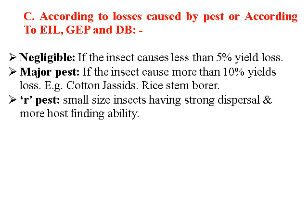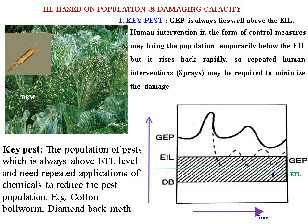R-pests: small-sized insects having strong dispersal and more host-finding capability are termed as R-pests. Based on pest population and damaging capacity, the first category is key pest. The general equilibrium position always lies well above the economic injury level (EIL). Human intervention in the form of control measures may bring the population temporarily below the EIL, but it rises back rapidly. Repeated human intervention or stress may be required to minimize the damage. The population of the key pest always remains above the EIL and needs repeated applications of chemicals. For example, cotton bollworm, diamond-back moth. These are examples of key pests.